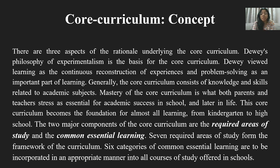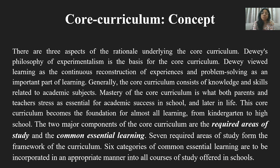Generally, the core curriculum consists of knowledge and skills related to academic subjects. Mastery of the core curriculum is what both parents and teachers stress as essential for academic success in school and later in life. Core curriculum becomes the foundation for almost all learning from kindergarten to high school. The two major components of the core curriculum are the required areas of study and the common essential learning — seven required areas of study and six categories of common essential learning.